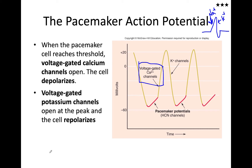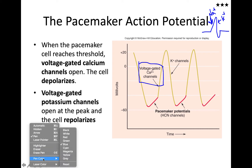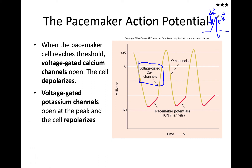The skeletal muscle action potential was similar, with a difference in that there was no hyperpolarization phase, because we start at minus 85. Nevertheless, the rising phase for skeletal muscle is sodium and the falling phase is potassium.